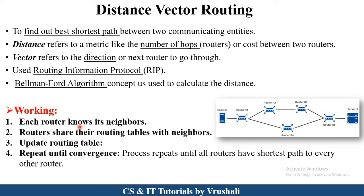These are the working steps. Router R1 generates a routing table, finds out the neighbor nodes and their distances. Suppose R1 sends information to R4; router R4 receives those routing tables, updates them, and sends the routing tables to RF10 as per the shortest path and shortest distance. RF10 again checks the routing table, updates the distance, and sends information to the server.